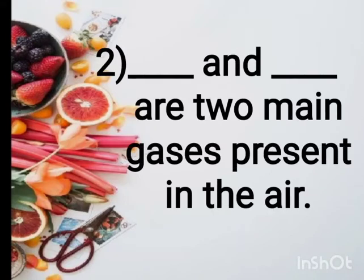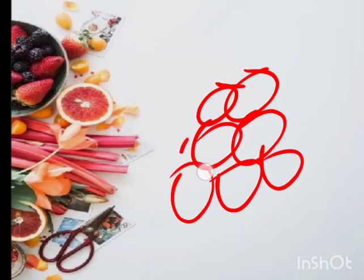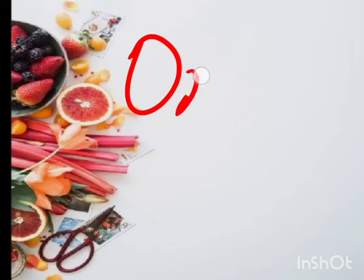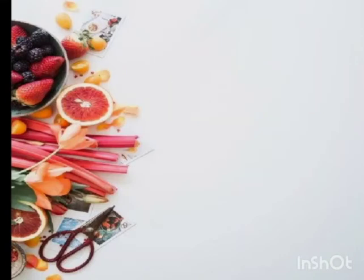Dash and dash are two main gases present in the air. You have to tell two gases which are present in air. Though air has many gases mixed in it, there are two main gases. For breathing, which gas do we need? We need oxygen. And the second main gas is carbon dioxide.